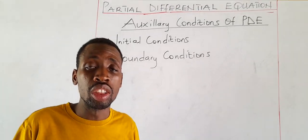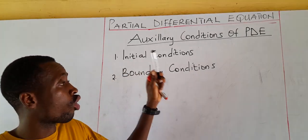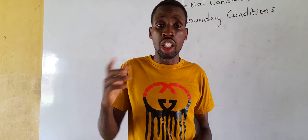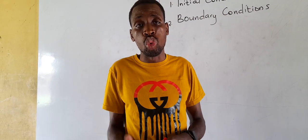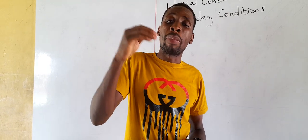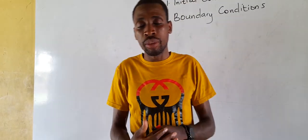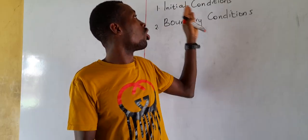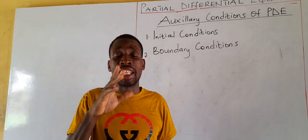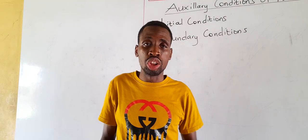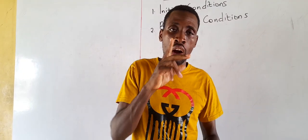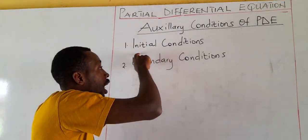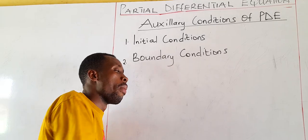Today our discussion on partial differential equations will be on auxiliary conditions of partial differential equations. At times when we solve PDEs, some conditions will be given to us to find a particular solution to the general solution. Those conditions are known as auxiliary conditions. They can either be initial conditions or boundary conditions — so we have two types of conditions in solving partial differential equations.